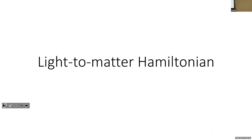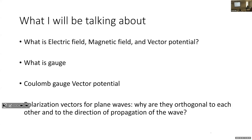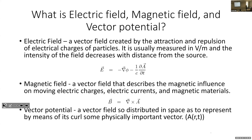I'm Tori, and I'll be presenting the definition of light-matter interaction. I'm going to skip the overview and go into some definitions. The first thing we need to know is what exactly the electric field, magnetic field, and vector potential are. The electric field is a vector field created by the attraction and repulsion of electrical charges, usually measured in volts per meter. The intensity of the field decreases with distance from the source.